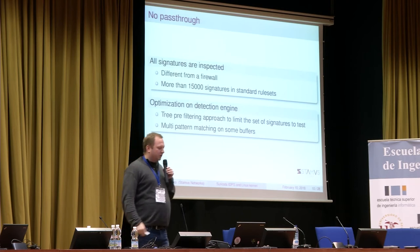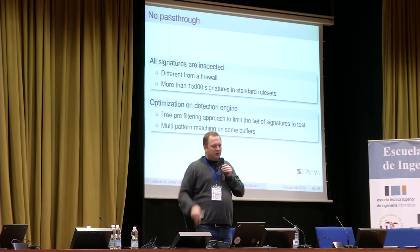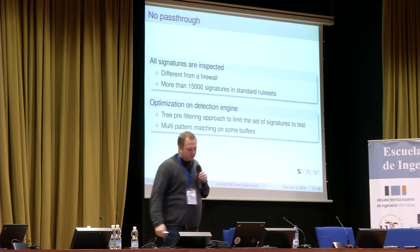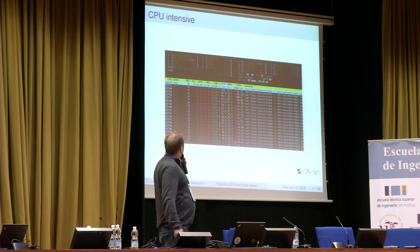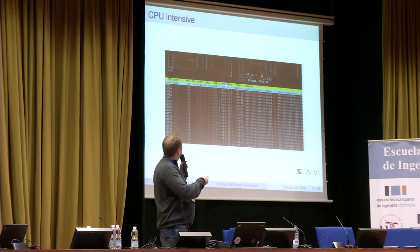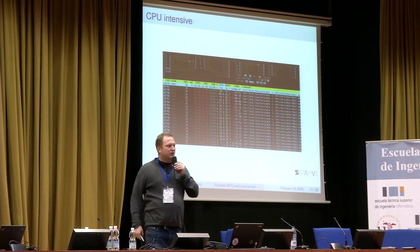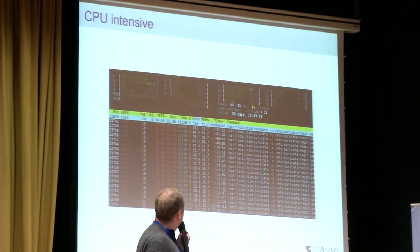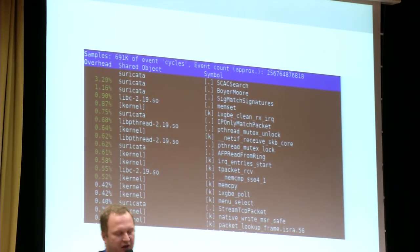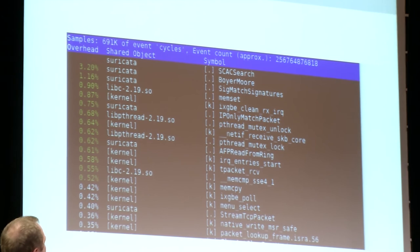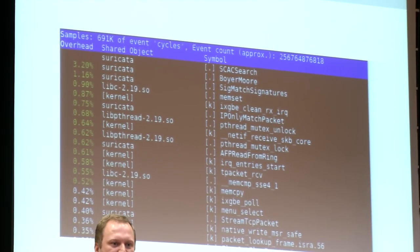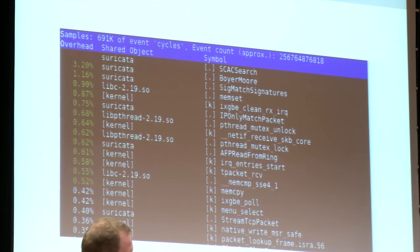Multi-pattern matching is really efficient — instead of inspecting thousands of signatures, we inspect just a few. As an example output: a box running around 3-4 Gbps with 16 CPUs has a load of around 8, running about 15,000 signatures. Looking at the profiling, around 65% of CPU time is in the main signature-matching function, while capture takes only a few percent.